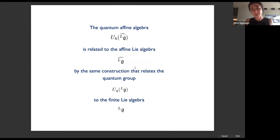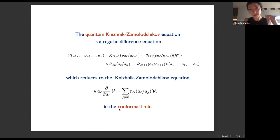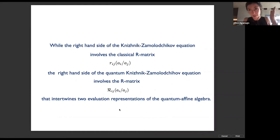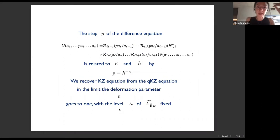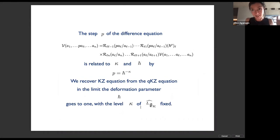The right-hand side of the KZ equation involves classical r-matrices, while the right-hand side of the quantum KZ equation involves an r-matrix which intertwines evaluation representations of the quantum affine algebra. The step p of the difference equation is related to kappa and ħ-bar. We recover the KZ equation from the qKZ equation in the limit where the deformation parameter goes to one, with the level of the affine Lie algebra kept fixed.